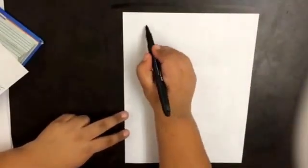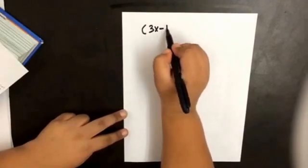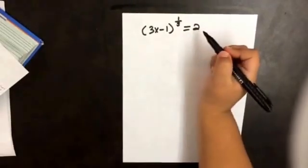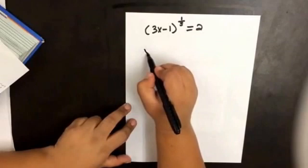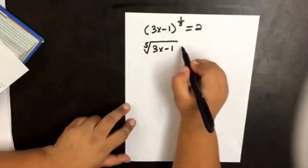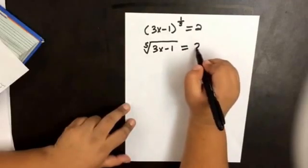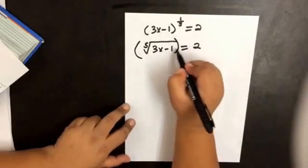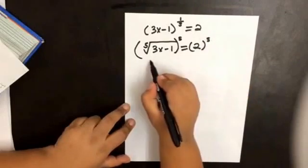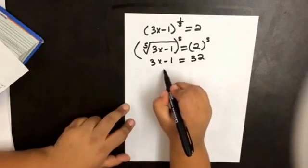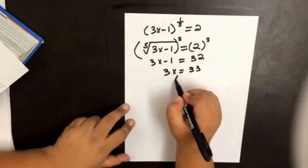Now we're going to solve equations with rational exponents. If we have 3x minus 1 to the 1 over 5 equals 2, we can rewrite this as the fifth root of 3x minus 1 equals 2. To get rid of the fifth root, I'm going to raise both sides to the fifth power. So then 3x minus 1 equals 32, meaning 3x equals 33, so x equals 11.